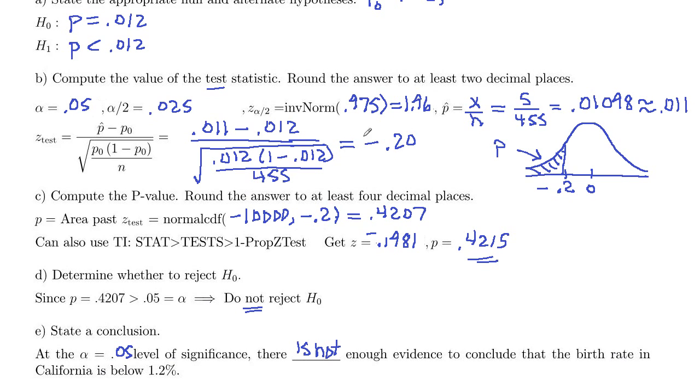So if you have to pick, just to reiterate, if you have to pick between your calculated from the formula value and the p-value given in one prop z-test, choose this one, if they're asking for what is the p-value, because that one does not have any roundoff error, this has got roundoff error.